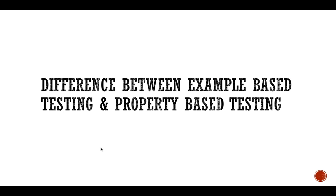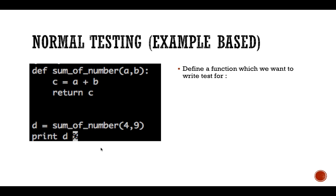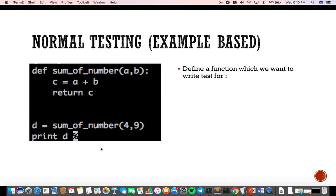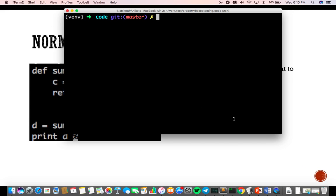What is the difference between example-based testing and property-based testing? If I take a normal example — which is example-based testing — let's say I have a function that does the sum of two numbers. As you can see, I have a function called 'sum of numbers' and it adds those two numbers and returns the output. That's all it does.